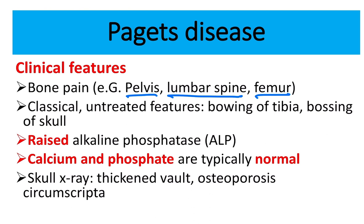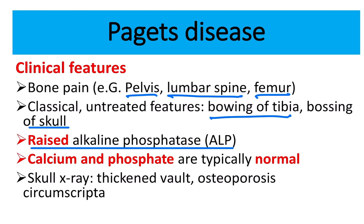Classical untreated features are bowing of the tibia and enlargement of the skull, making structural deformity obvious. Alkaline phosphatase is raised due to excessive bone formation activity. Importantly, calcium and phosphate levels are usually normal in the blood.